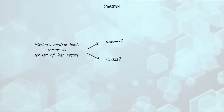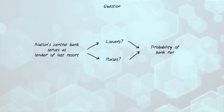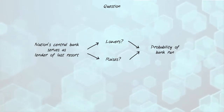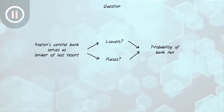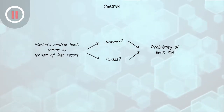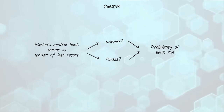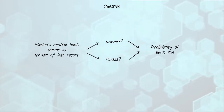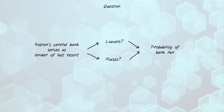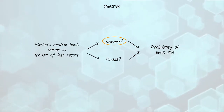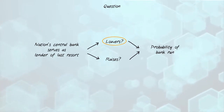Here's a question: is the probability of a bank run on the private banking system higher or lower if a nation has a central bank that serves as a lender of last resort? The answer is lower. The beauty of having a central bank serve as lender of last resort is that once depositors are confident the government will back up their deposits, it will be far less likely that they attempt to run on their private bank. In this way, a central bank lends stability to the private banking system.